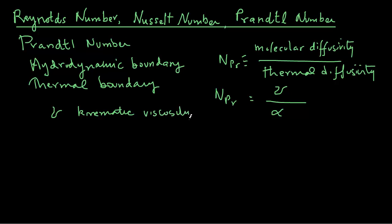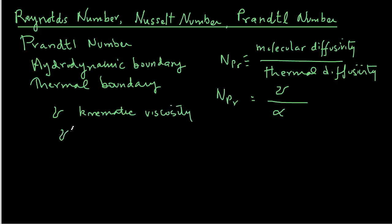Kinematic viscosity is the absolute viscosity divided by density, so it's mu over rho, and thermal diffusivity is k over rho cp. If we substitute these, we find that the Prandtl number will be mu cp over k.